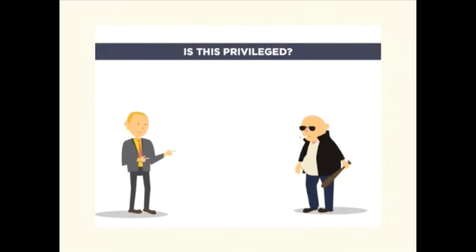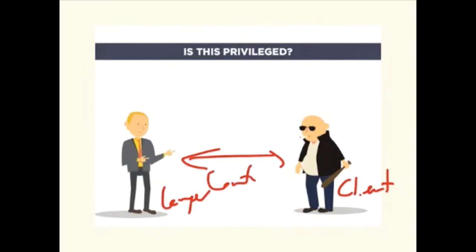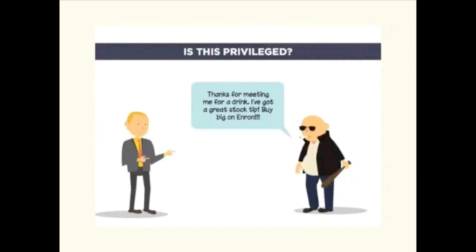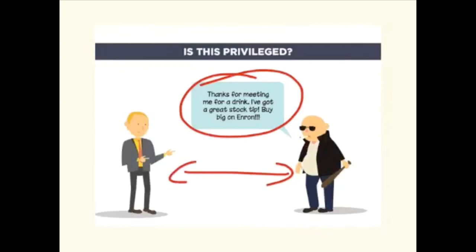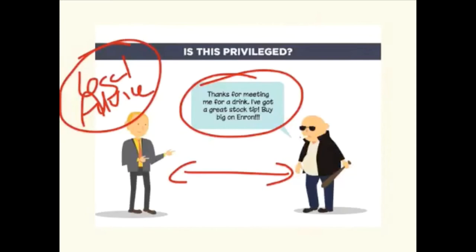For a privilege to occur, we've got to have a client, a lawyer, and a communication that is confidential. But we also need the other key part: the communication must be made for the purposes of seeking legal advice. If Johnny comes in and has a beer with his lawyer and says, 'I've got a great stock tip — buy big on Enron,' and he's later charged with stock fraud, that's arguably admissible. There's no basis to believe these two are meeting for the purpose of obtaining legal advice. A lawyer is not immune from giving evidence — the communication has to be given for the purpose of seeking legal advice.